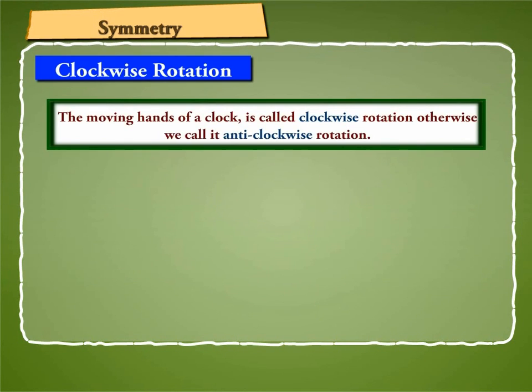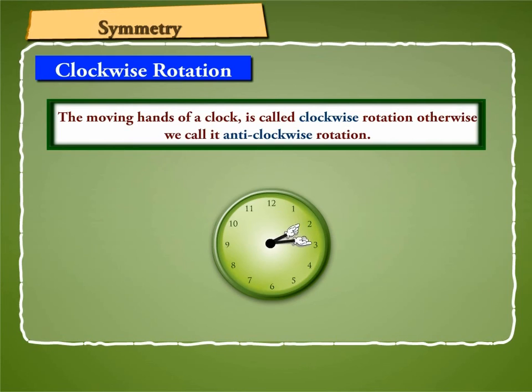Rotation, like the moving hands of a clock, is called clockwise rotation. Otherwise, we call it anti-clockwise rotation. Also, when an object rotates, its shape and size do not change.